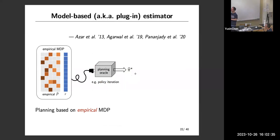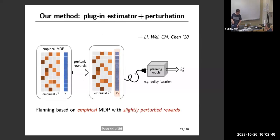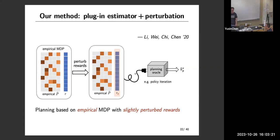What we propose is to make progress by improving this algorithm with a very, very small modification: I insert a perturbation step. I keep the empirical model the same as before, but I manipulate the reward function a tiny little bit by adding very small Gaussian noise to the original reward function. Then with this new reward function, I still use the empirical model and run the dynamic programming approach. I call it the perturbed version of the model-based approach.